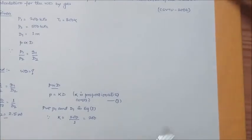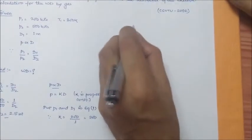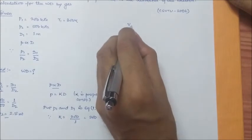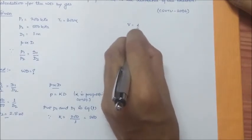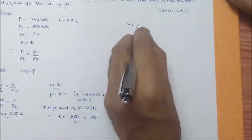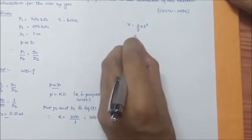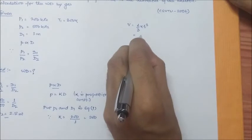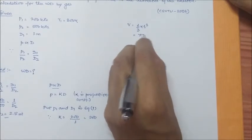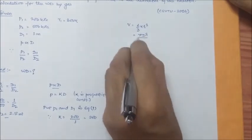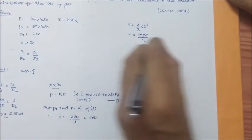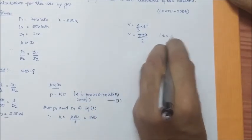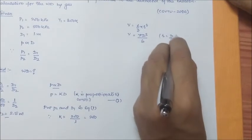Now also we know that volume of spherical balloon is 4/3 π r³. It can be written as π D³/6, as r is equal to D/2.